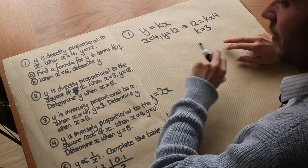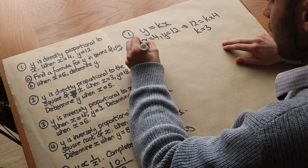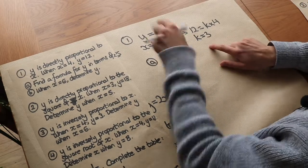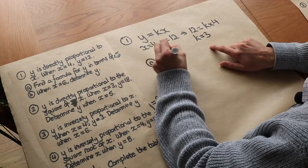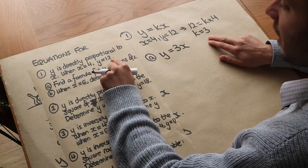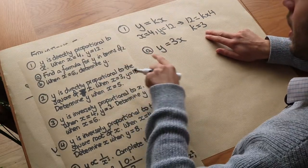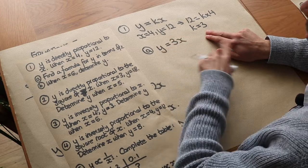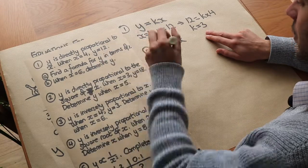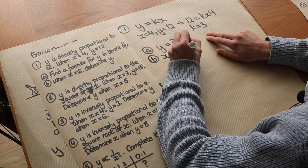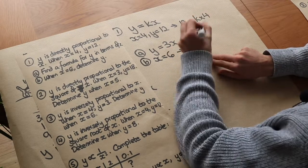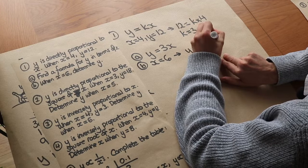We've answered the first part: find the formula for y in terms of x. We've got y equals kx and we know k is 3, so our formula is y equals 3x — the y value is 3 times the x value, which we can clearly see: 12 is 3 times as big as 4. Now that we have the complete formula we can use it for other values. When x is 6: y equals 3 times 6, which equals 18.